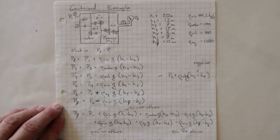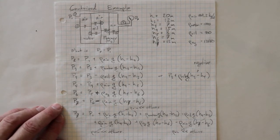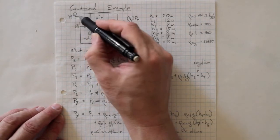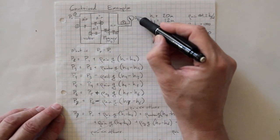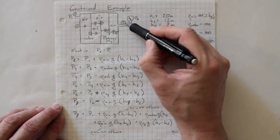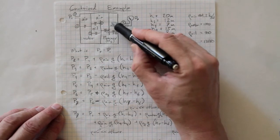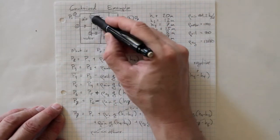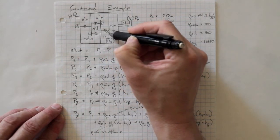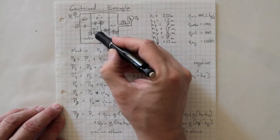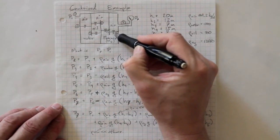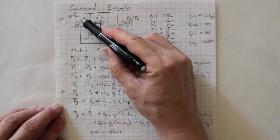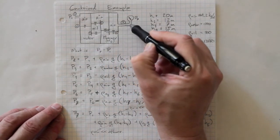Here's a totally contrived example problem for fluid statics — the kind of thing professors like to put in textbook problems and on exams. We've got a pressure at location one, and this chamber is full of air and exposed to that pressure. There's a pressure gauge at location seven that we'd like to know the reading of, also exposed to air. In between, we've got some walls and baffles dividing up this tank, with water, oil sitting on top of it, an air pocket, and some mercury. We need to follow the path all the way through to find the pressure at seven.